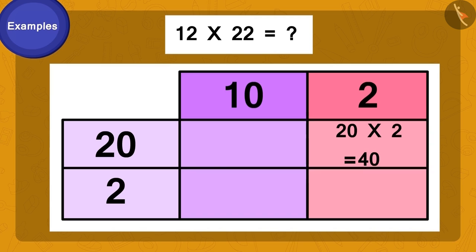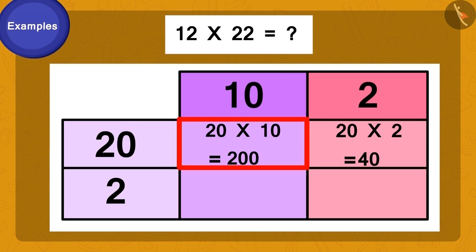Now, we multiply 10 by 20. 20 times 10 is 200. We will write this answer here.